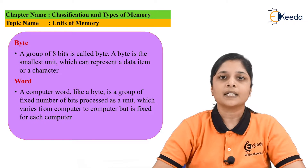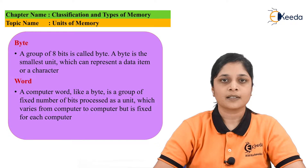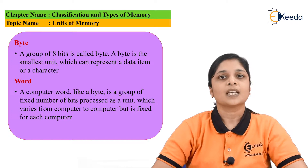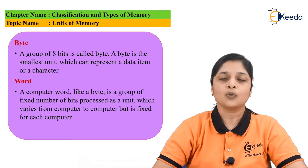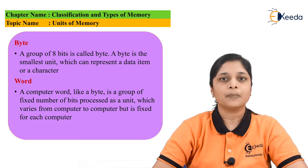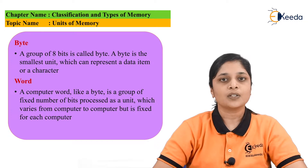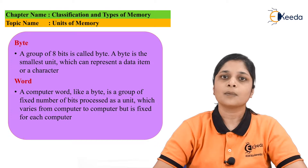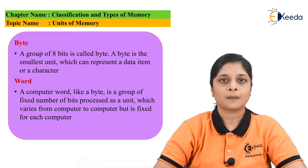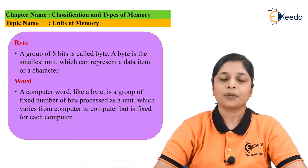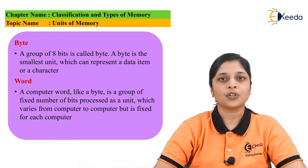One byte consists of eight bits. If inside your program there is a group of eight bits for defining any variable or a number, then you can directly use the memory unit byte. After that, we have the memory unit word.